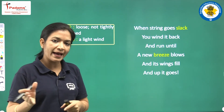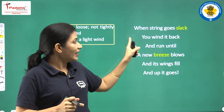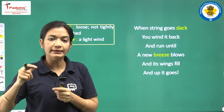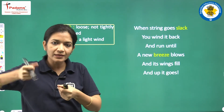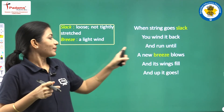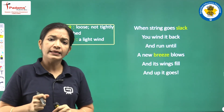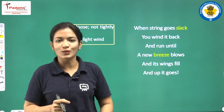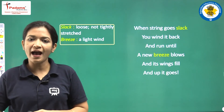The poet explains that there is a boy flying the kite. 'When the string goes slack, you wind it back.' When you are flying the kite and the wind stops, the kite starts to come down, so the flyer rolls the thread back — woh apni charkhi vaapis se lapetni lag jata hai. Then he runs until a new breeze blows, trying to keep the kite airborne. 'And its wings fill and up it goes' — when the air starts blowing again, the kite rises high up in the sky.